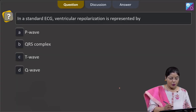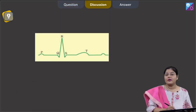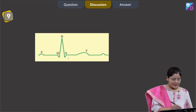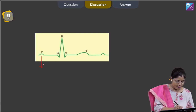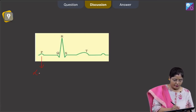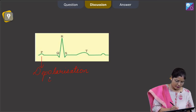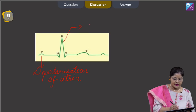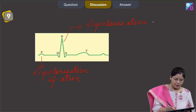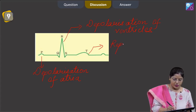In a standard ECG, ventricular repolarization is represented by - let us see the standard ECG. In a standard ECG, P wave indicates depolarization of atria, QRS complex indicates depolarization of ventricles, and T wave indicates repolarization of ventricles.